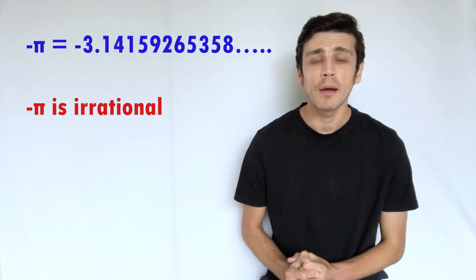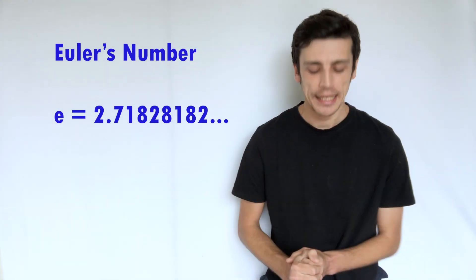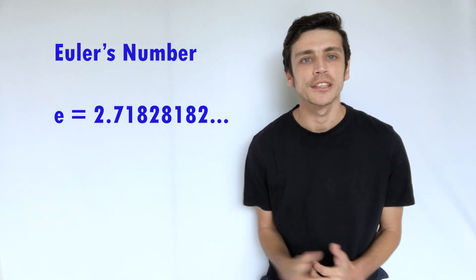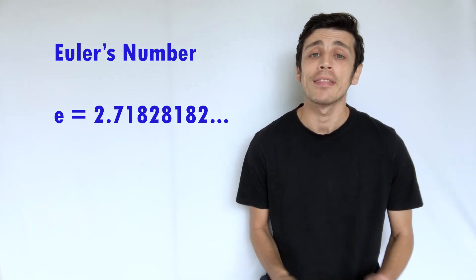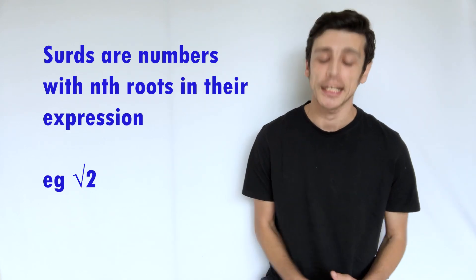Another famous one that we have of course is Euler's number, which is e. It's represented as e and that's 2.718281 and it goes on and on and on and on forever. And again that's another number that can't be represented as a fraction, so it is irrational.